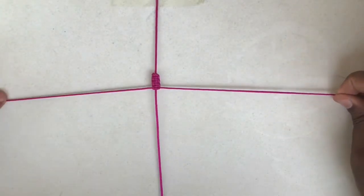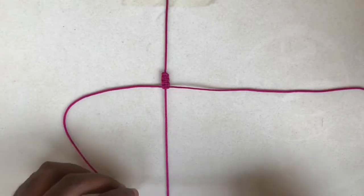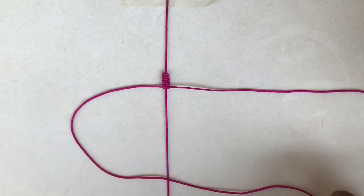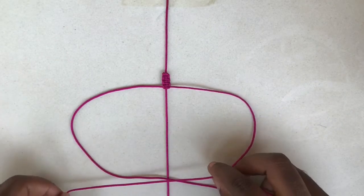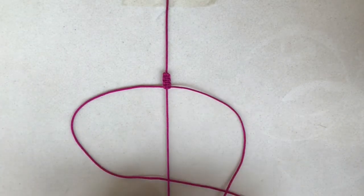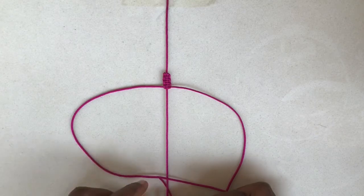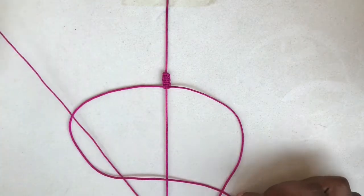Now we are going to keep making square knots throughout the bracelet, but keep in mind that you always have to start from the opposite sides to make your work beautiful.